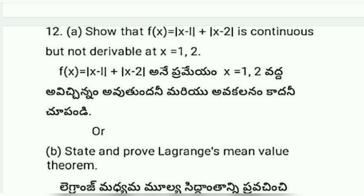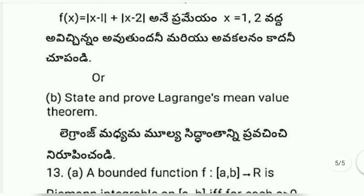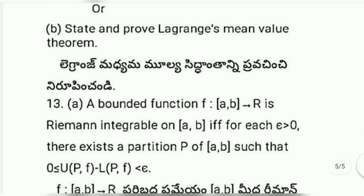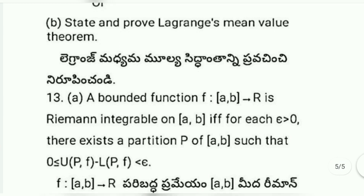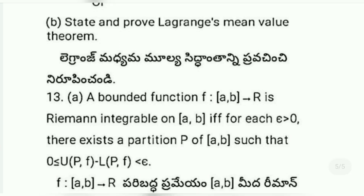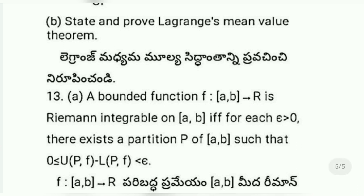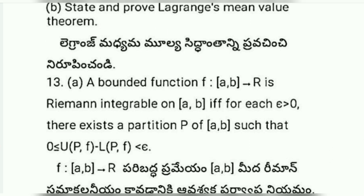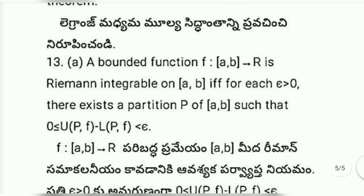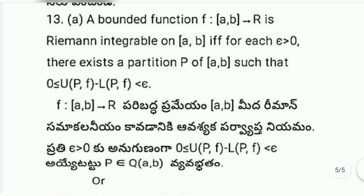We have Lagrange's theorem. Thirteenth a: a bounded function f on [a, b] to R is Riemann integrable on [a, b] if and only if for all epsilon greater than zero, there exists a partition P of [a, b] such that U(P, f) minus L(P, f) is less than epsilon.